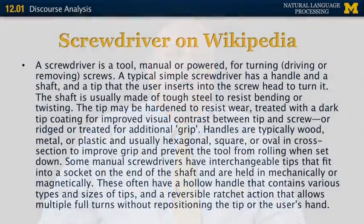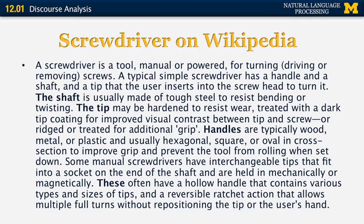Let's look at some other properties of discourse. I looked up the definition of a screwdriver — the tool — on Wikipedia. Here's roughly what it looks like. 'A screwdriver is a tool, manual or powered, for turning screws,' and so on. What you need to pay attention to is the presence of some discourse structure. The words 'the shaft,' 'the tip,' and 'handles' are introduced at the beginning of sentences and they refer back to objects introduced directly or indirectly in previous sentences. The same applies to the word 'these' in the final sentence.